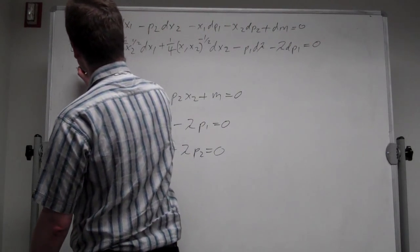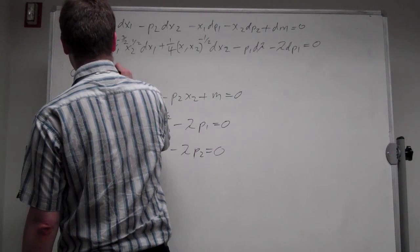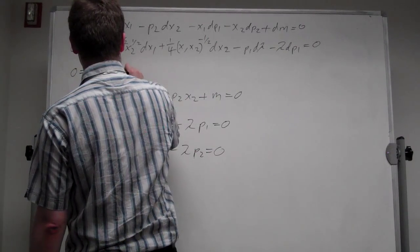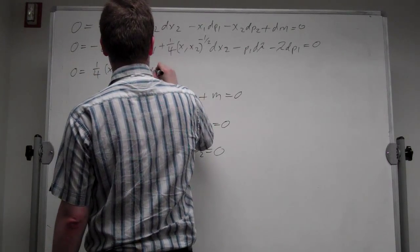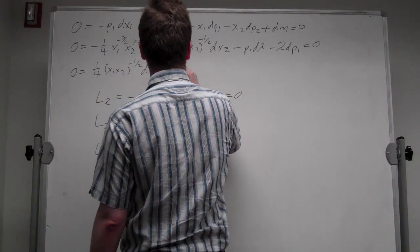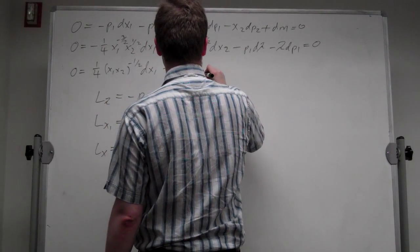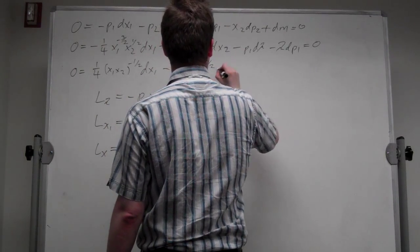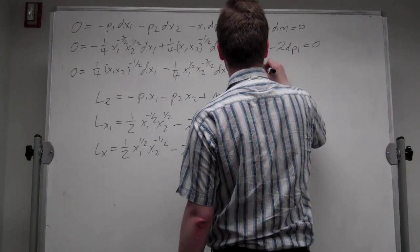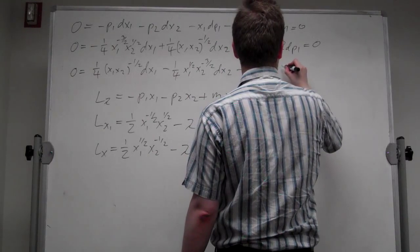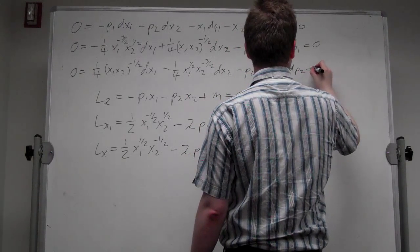And the third equation: 0 equals (1/4)*x1^(1/2)*x2^(-3/2)*dx2 minus p2*d_lambda minus lambda*dp2 equals 0.